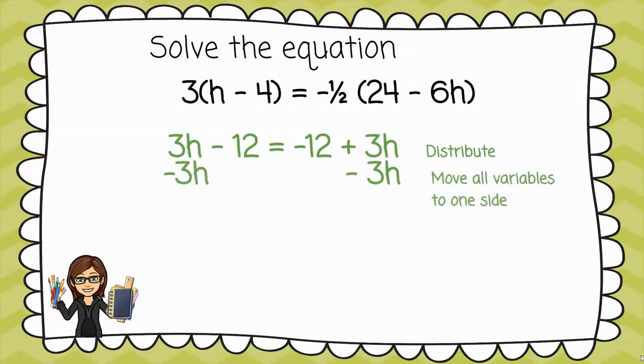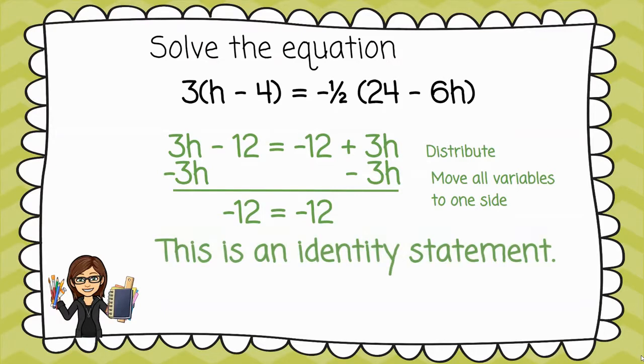I'm going to go ahead and move all my variables to one side, so I'm subtracting 3h from both sides. Notice what's left: negative 12 equals negative 12. Is that true or false? You're right, it is always true.